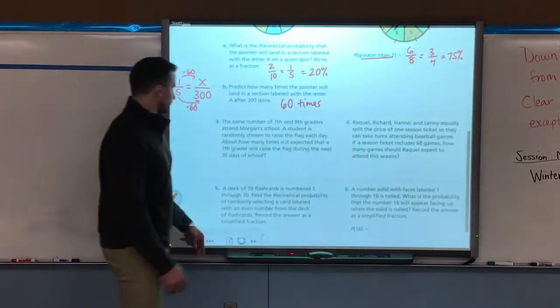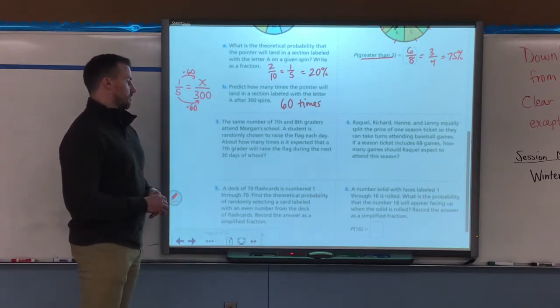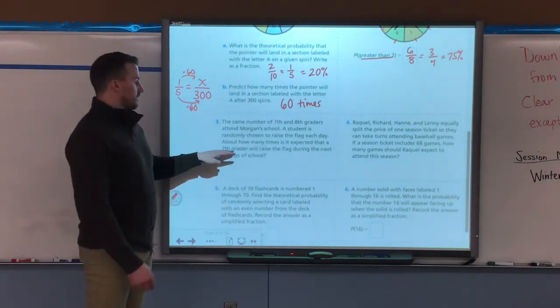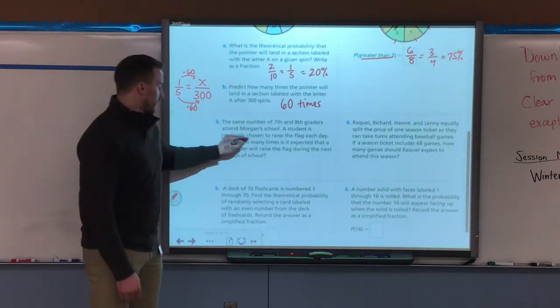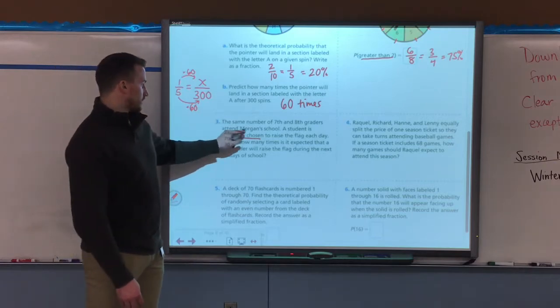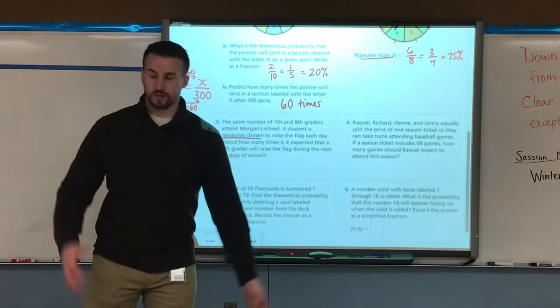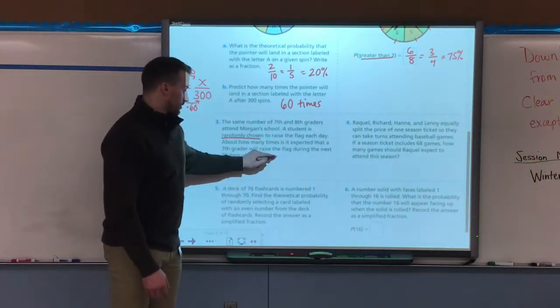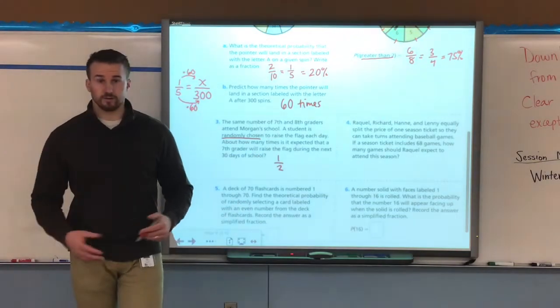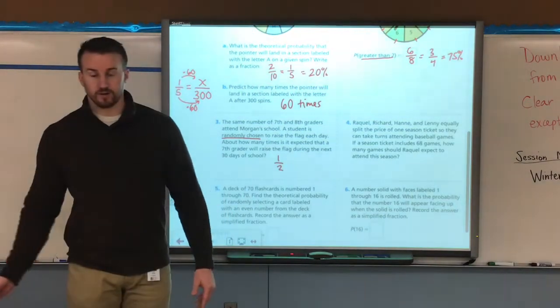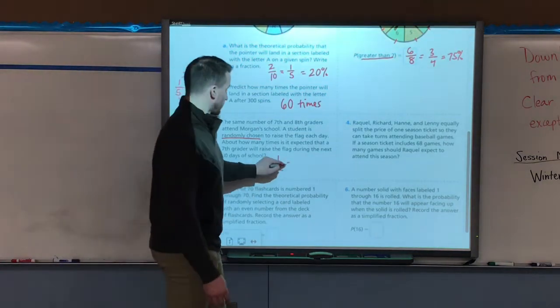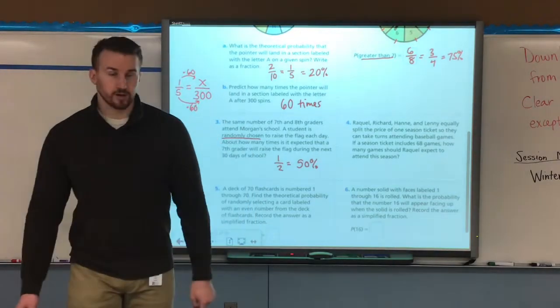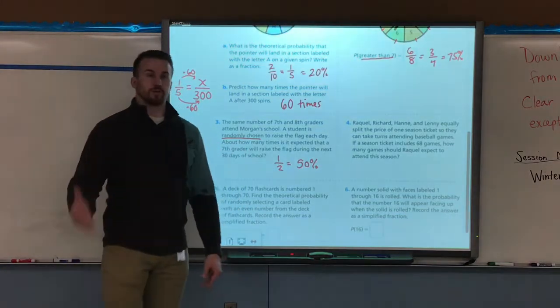Example three. It says the same number of seventh and eighth graders attend Morgan's school. A student is randomly chosen to raise the flag each day. About how many times is it expected that a seventh grader will raise the flag during the next 30 days of school? Well if it says that it's chosen randomly, and it says the same number of seventh and eighth graders, so we could say 500 seventh graders, 500 eighth graders, it's the same number for both grades. So how many times would it be expected that a seventh grader would raise it? We would say half the time, right? So if it's chosen at random and there's half seventh graders, half eighth graders for the next 30 days, it would be one half, or 50%. Again that's a prediction.